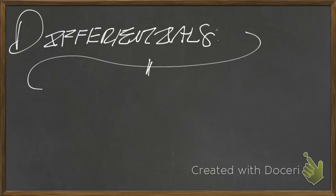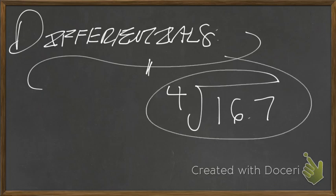What are differentials? Differentials are a useful way to use calculus to approximate the value of points on really ugly functions. So for instance, today we're going to be evaluating the fourth root of 16.7. Yikes, that is ugly. So what can we do about that?